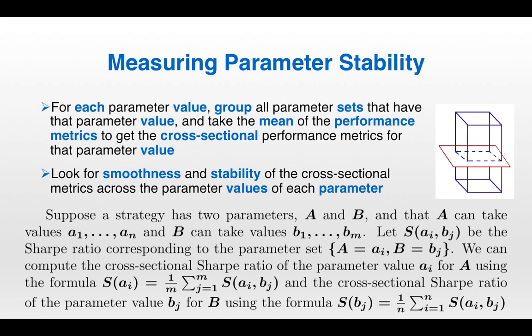It's also important to check for parameter stability. For each parameter value, you group all the parameter sets that have that particular parameter value and take the mean of the performance metrics to get the cross-sectional performance metrics for that parameter value. Think back to the moving average cross example that was very clearly overfit — we knew it was overfit because if the parameter values changed just slightly, the Sharpe ratios would change dramatically. That was easy to see because the strategy only had two parameters. But if you have a strategy that's more complicated with many different parameters, it's going to be impossible to tell just by looking at Sharpe ratios for each parameter set whether any individual parameter happens to be overfit. So what we do is reduce the dimensionality of the problem by taking a cross-section.